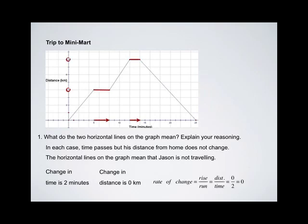If we calculate his rate of change again using rise over run, distance over time, we have 0 over 2. Again, his rate of change is 0 kilometers per minute.